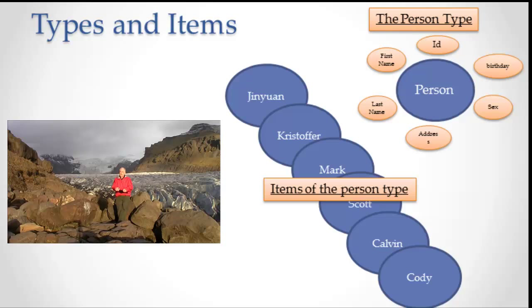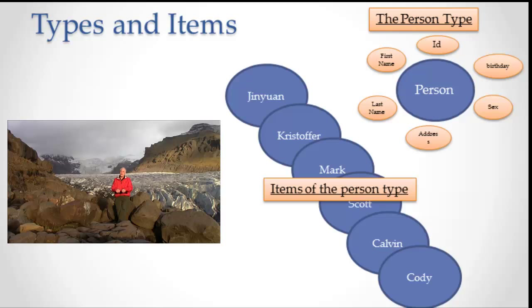Now why do we need this concept of an item? Because the type alone is not enough. And in fact, we don't really store the type — we store items. We store Bob and Joe and Jane and Jin Yuan and whoever else. Those are the things that we store.